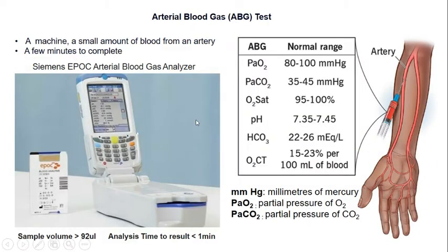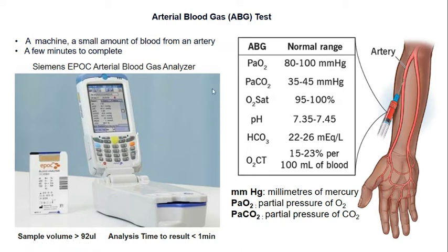Before we talk about the different types of respiratory failure, let me introduce a very accurate testing method called the arterial blood gas test, used to measure the levels of oxygen and carbon dioxide in arterial blood. The test requires a machine and the collection of a small amount of blood from an artery, usually from the wrist. The test only takes a few minutes to complete, so it is a safe and simple procedure.